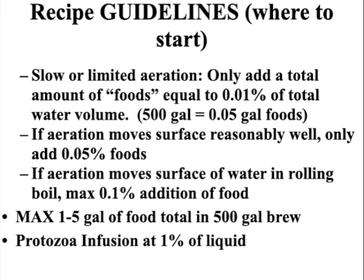If you've got that rolling boil on the surface, you can be putting in 0.1 percent — a whole gallon into a 500-gallon brewer. That's a sum total — if you're putting kelp, humic acid, a little oatmeal — the sum total is a maximum of one to five gallons of food, no more ever under any condition, or you're going to go anaerobic during the brew. If you're doing a 50-gallon brew, reduce that by a factor of ten. For a five-gallon brew, reduce by another factor of ten. Once you make your brew, check the biology and see what actually grew.